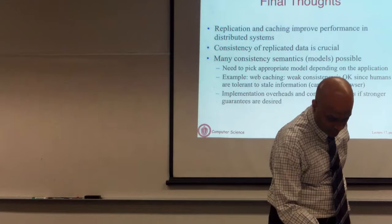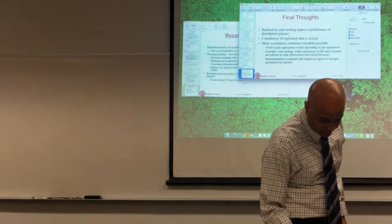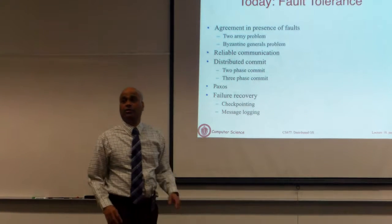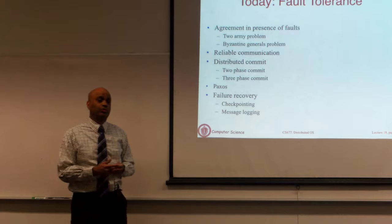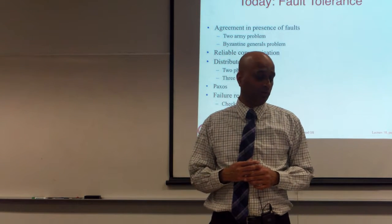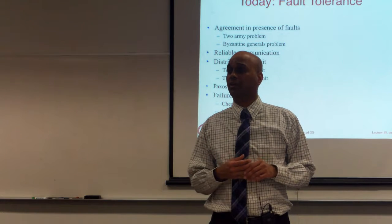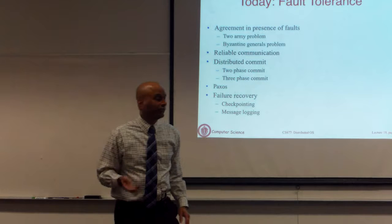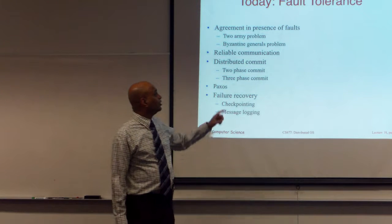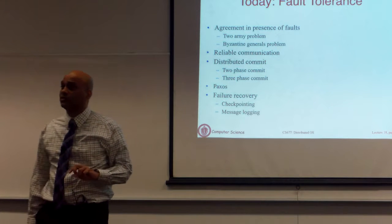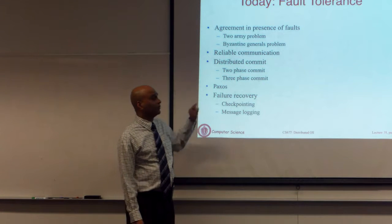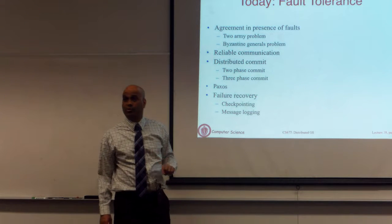Let me switch to a new chapter: fault tolerance. We talked about replication in the past two lectures. In the next two lectures we will talk about fault tolerance — how to handle failures in your system. Today we cover higher-level concepts, then we will cover Byzantine faults, the Byzantine general problem, distributed commit, two-phase commit, three-phase commit, Paxos — which is used to ensure fault tolerance and is part of your lab 3 — and then failure recovery.